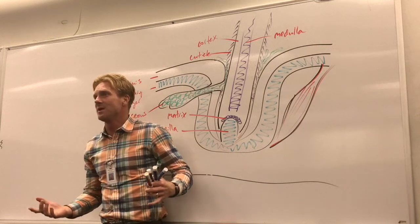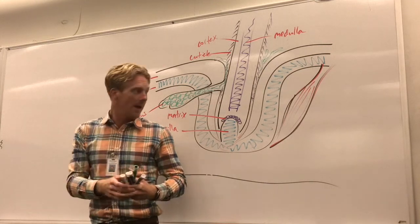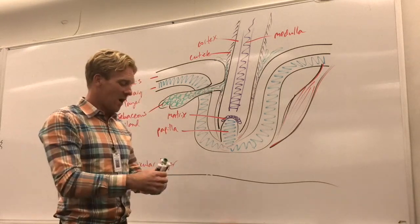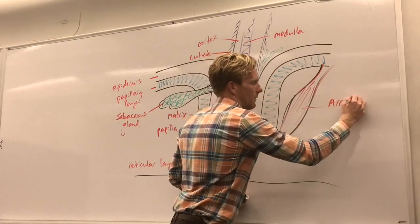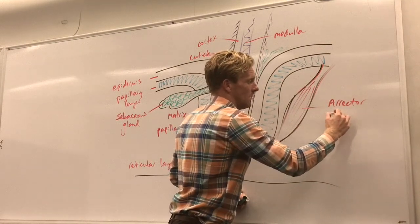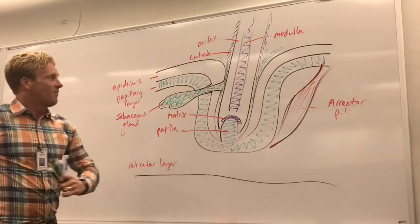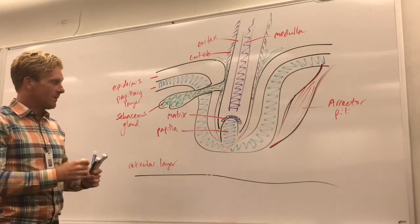The primary function of this is communication. Other mammals with fur—you might have a dog—when they get upset their hair stands up on their back. Well, this is permitted by this arrector pili muscle and it's a form of communication. It also functions to help kind of propel that sebum out of the sebaceous gland and out of the hair follicle.